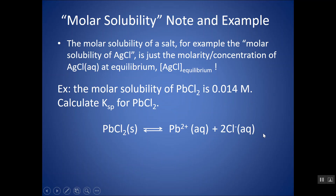When writing your equilibrium constant — you can write KSP instead of just K — remember that you do not include any solids in your equilibrium expression. So my equilibrium expression for this reaction is just my products raised to the power of their coefficient; in this case, the ions raised to the power of their coefficient. I could put it over 1, but anything over 1 is just itself, so we drop that.